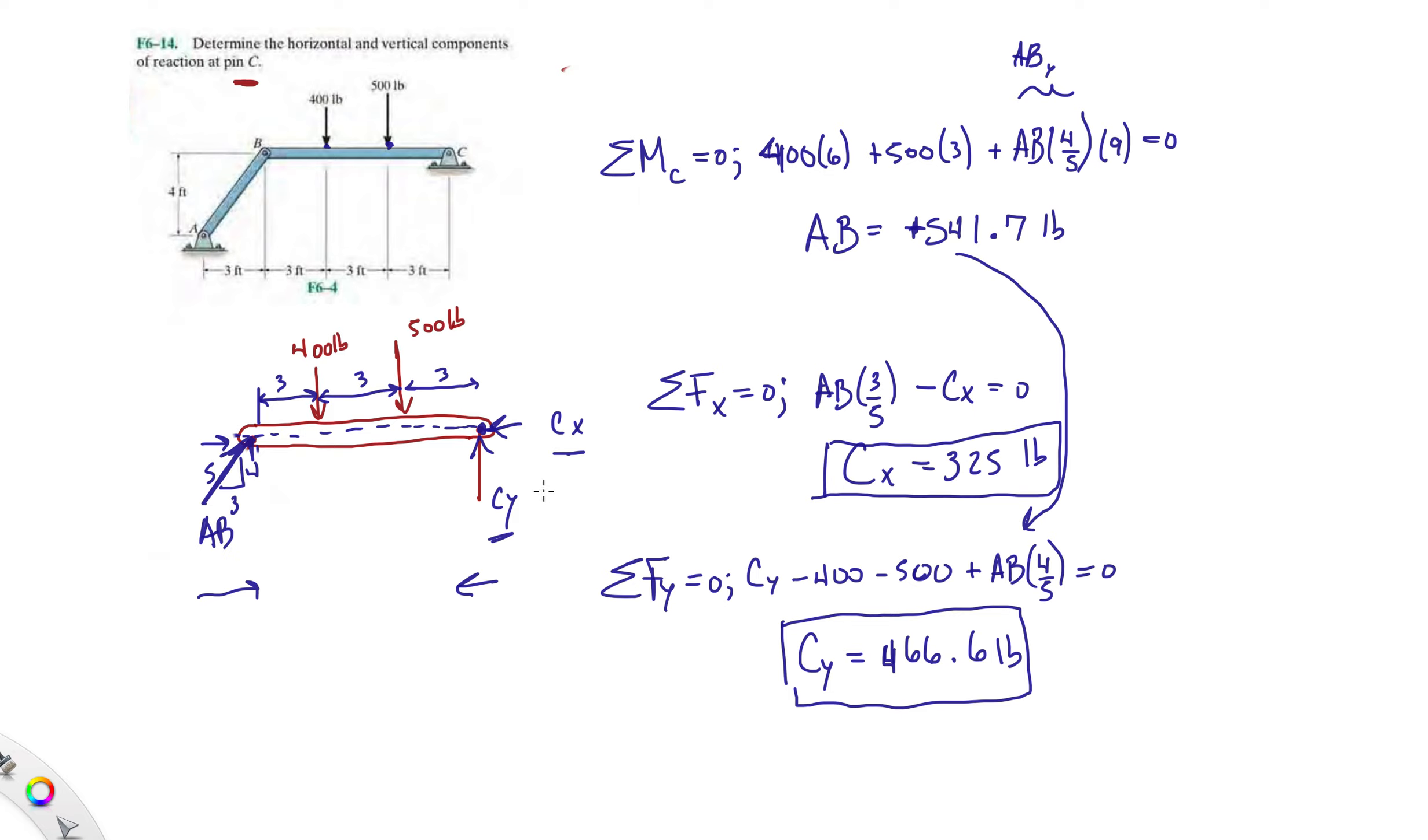We actually get a positive number, so that means our assumption that CY was pointing upwards is correct. That's it - those are your two components. Your professor might want the total reaction, so we know that the total reaction is going to be the magnitude of those two.